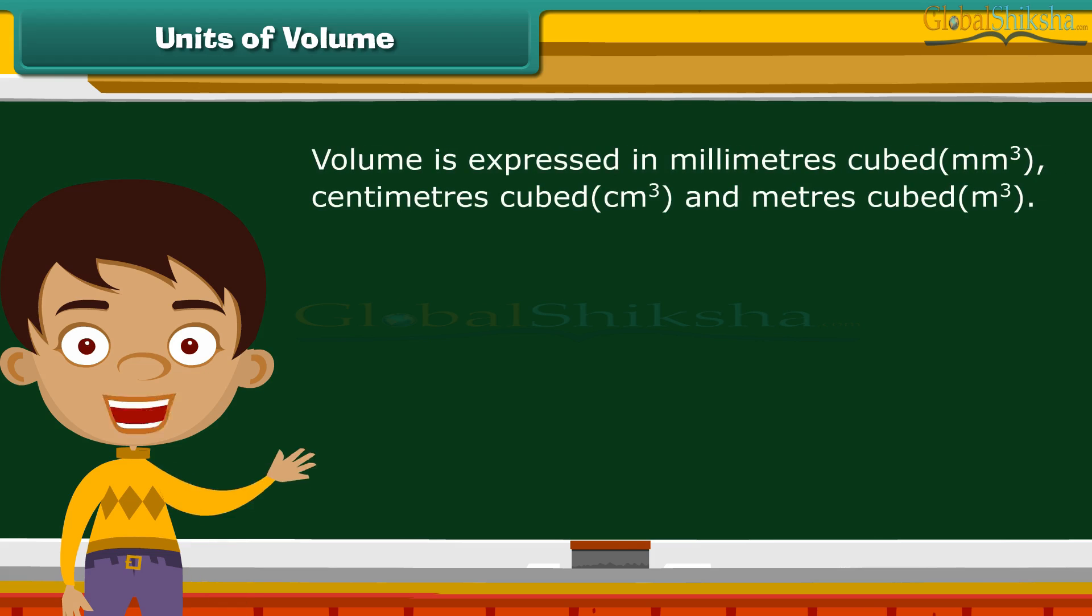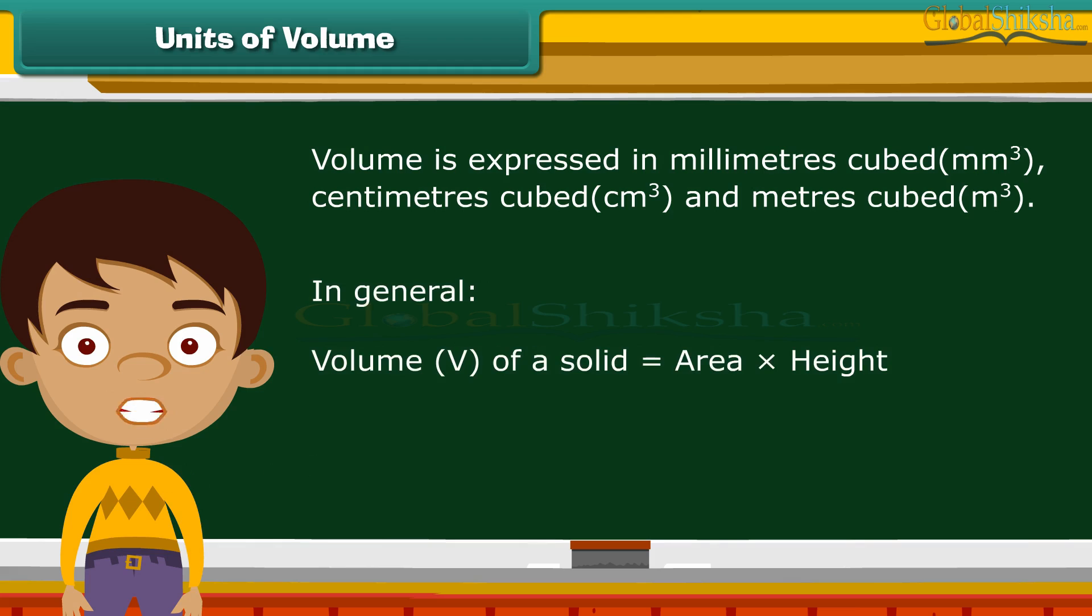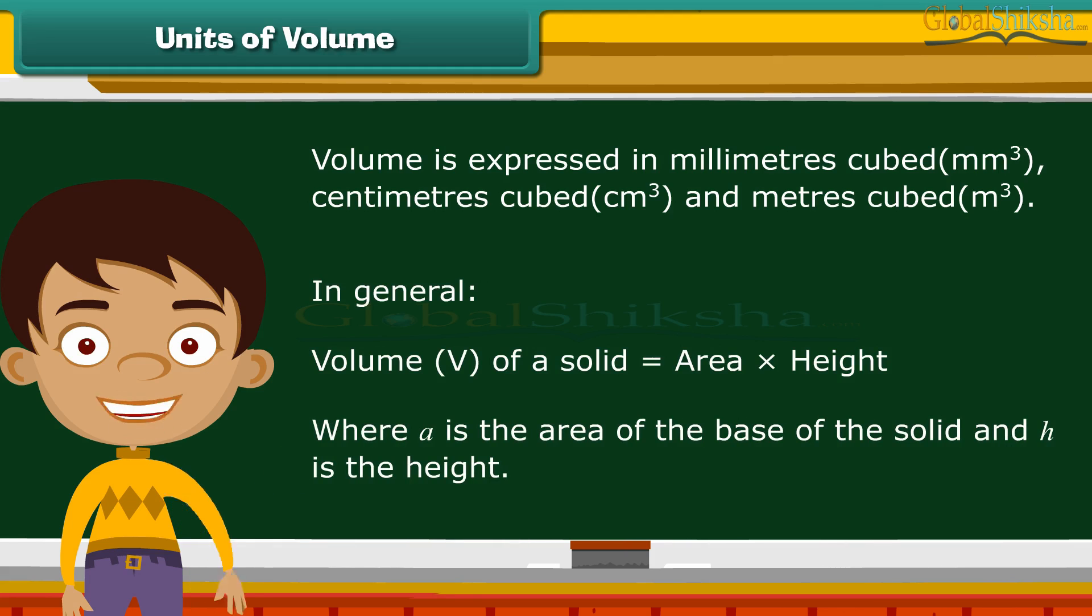Basically, volume is expressed in millimeters cubed, centimeters cubed and meters cubed. In general, the volume V of a solid is given by area of the base into height, where A is the area of the base of the solid and H is the height. Let's learn about the volumes of different objects.